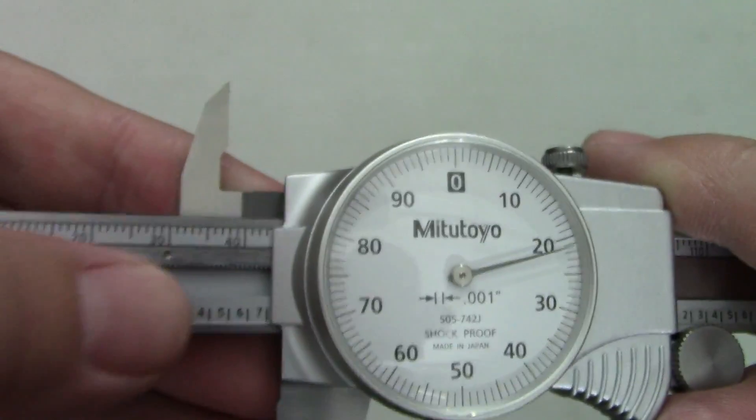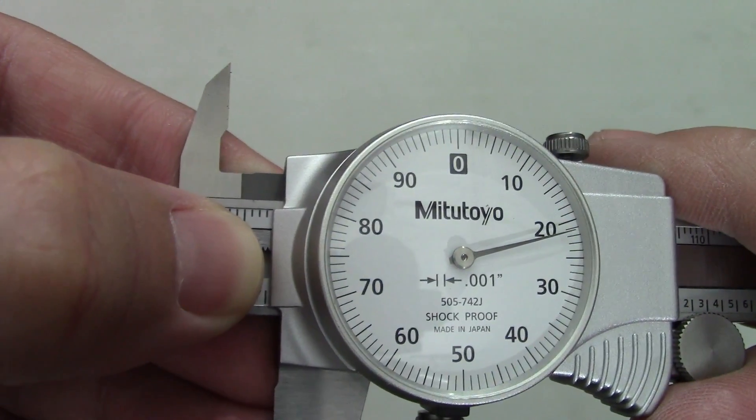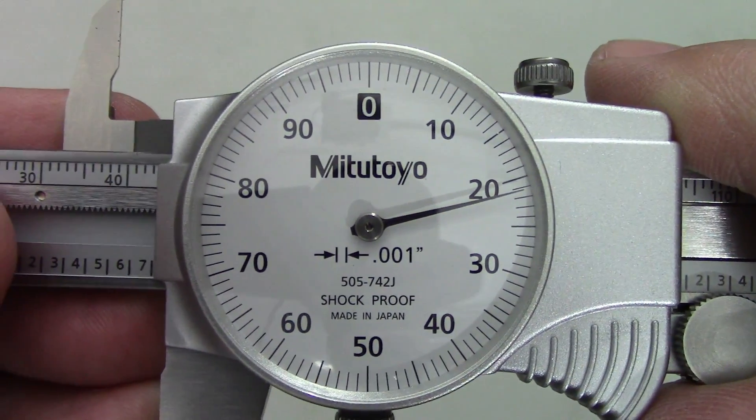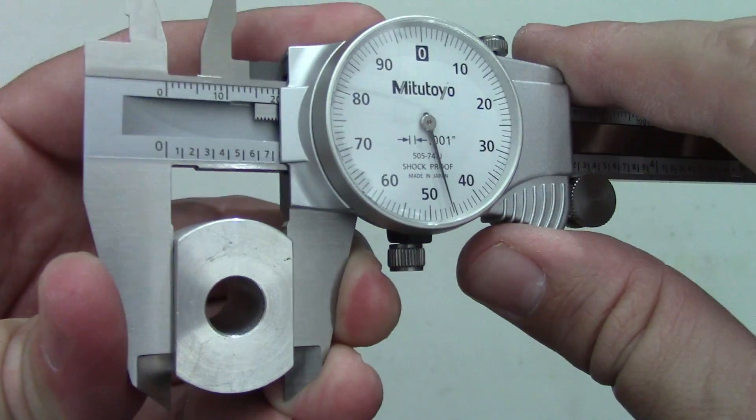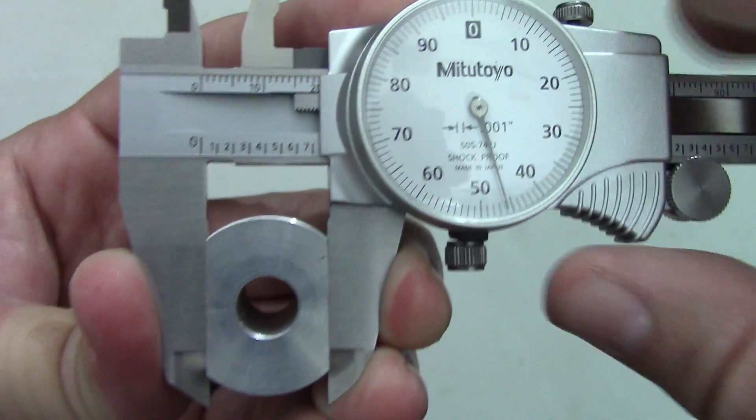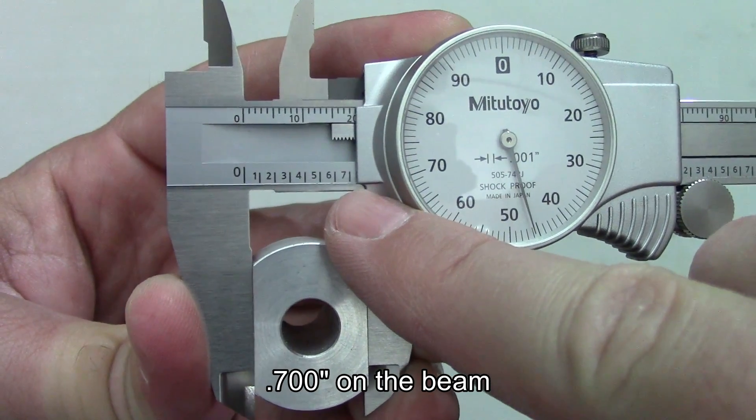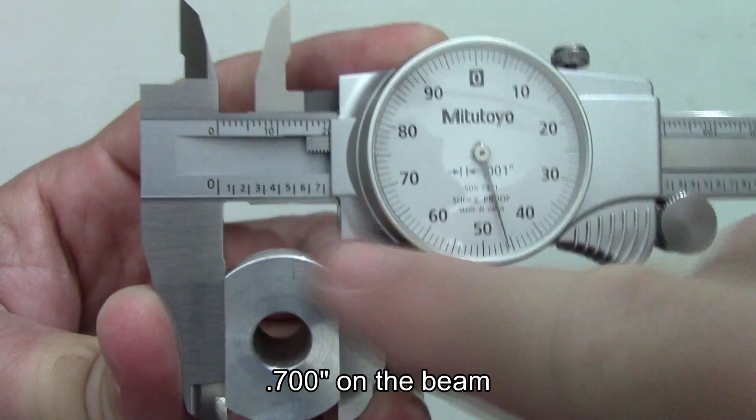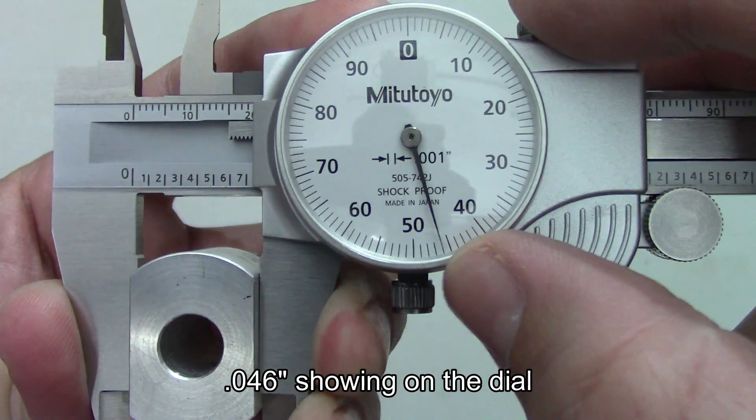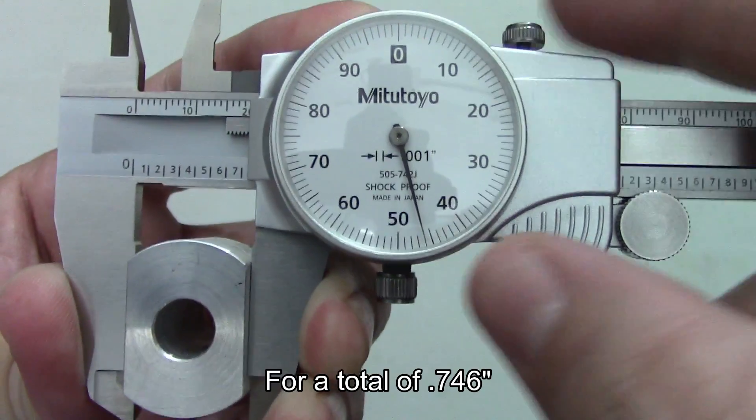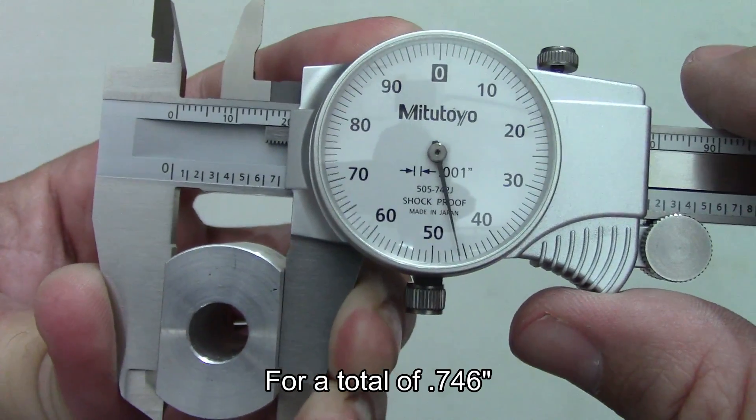On both types, the edge of the sliding jaw shows where you are on the beam scale and of course the needle points to your reading on the dial. Let's look at some samples of inch caliper readings. We can see on the beam we have seven hundred thousandths of an inch showing .700 and on the dial another 46 thousandths .046 for a total of 746 thousandths.